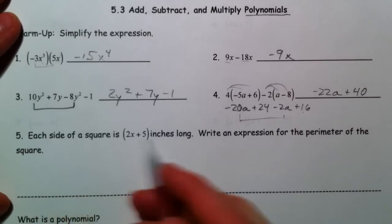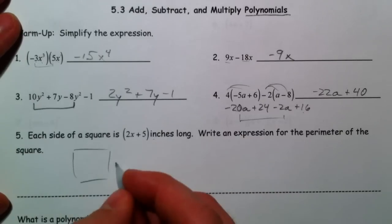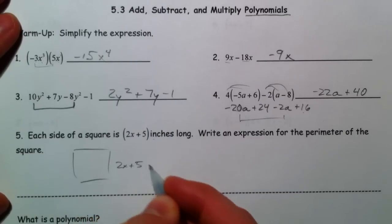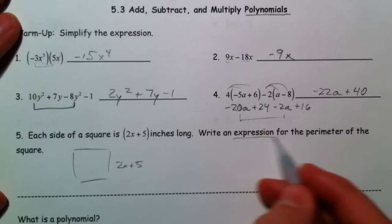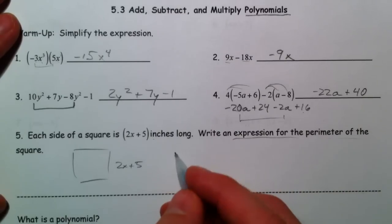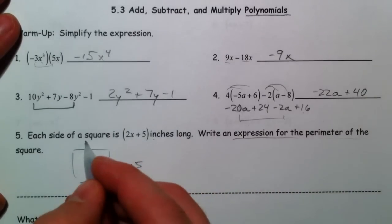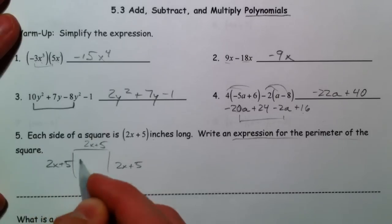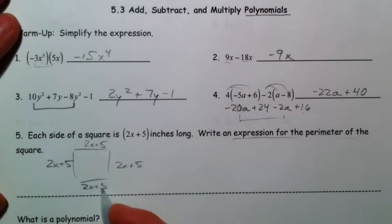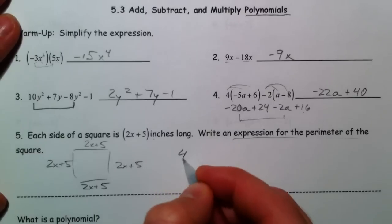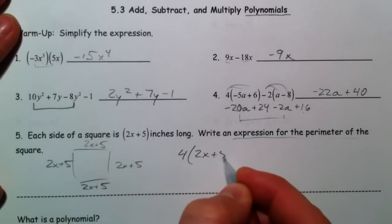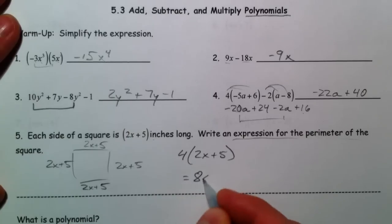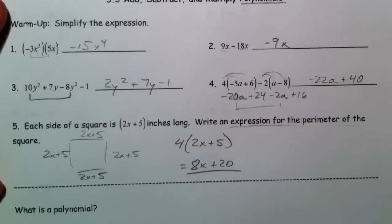Each side of a square is 2x plus 5 inches long. Write an expression for the perimeter. So you could say 2x plus 5, 2x plus 5, 2x plus 5, and add them all together. Or, because it's a square, you could say 4 times 2x plus 5. And so 8x plus 20 is our expression.